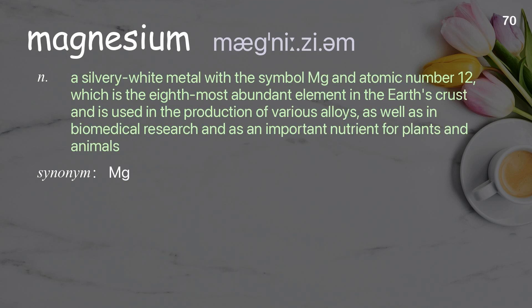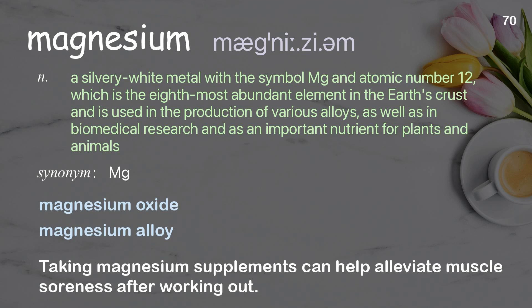Magnesium. A silvery-white metal with the symbol Mg and atomic number 12, which is the eighth most abundant element in the Earth's crust, used in the production of various alloys, as well as in biomedical research and as an important nutrient for plants and animals. Examples: Magnesium oxide. Magnesium alloy. Taking magnesium supplements can help alleviate muscle soreness after working out.